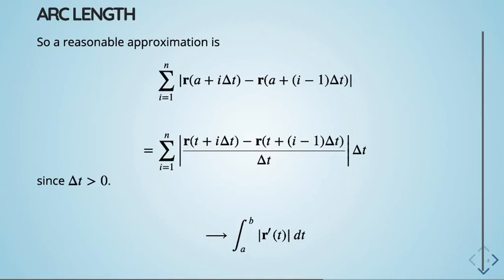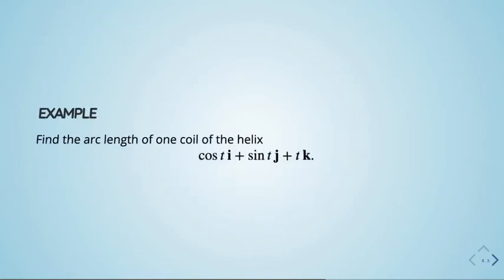These integrals tend to be difficult to do by hand because there's a square root sitting in there. If you just write down a random curve and try to find how long it is, you often get elliptic integrals — all sorts of difficult ones. So you don't have to do too many, but the formula should make sense.